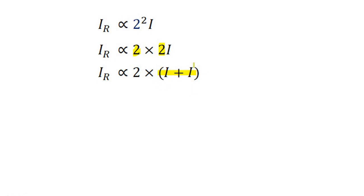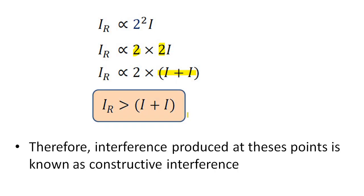Here, I is the intensity of the first wave and this I is the intensity of the second wave, so the sum of intensities is I plus I. IR is proportional to 2 times the sum of the intensities, which means IR is greater than the sum of the intensities. That is, the resultant intensity is greater than I plus I. Therefore, the interference produced at this point is known as constructive interference.